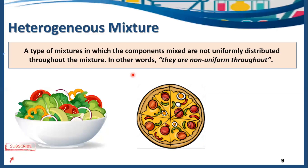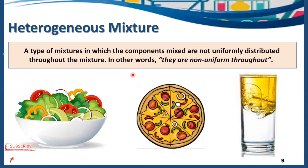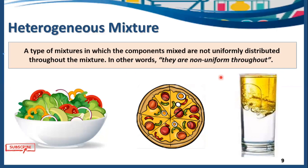Another example is water and oil mixture. In water and oil, you can see the oil very clearly because it is non-uniformly distributed throughout the mixture. Comparing oil mixture and salt solution, you cannot see the salt inside because it is uniformly distributed, but in the oil mixture you can clearly see the oil component because it is non-uniformly distributed.